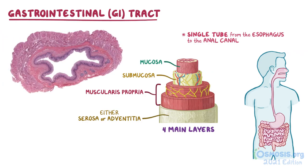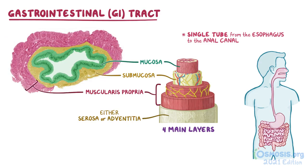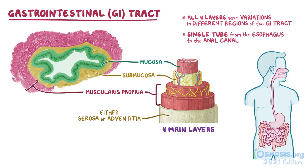Even in this low-power cross-section of the esophagus, we can see the inner mucosa, submucosa, and muscularis propria, although the outer adventitia isn't present in this image. All four layers have variations of their structure and function in different regions of the GI tract, but the mucosa is the layer that typically has the most significant changes.